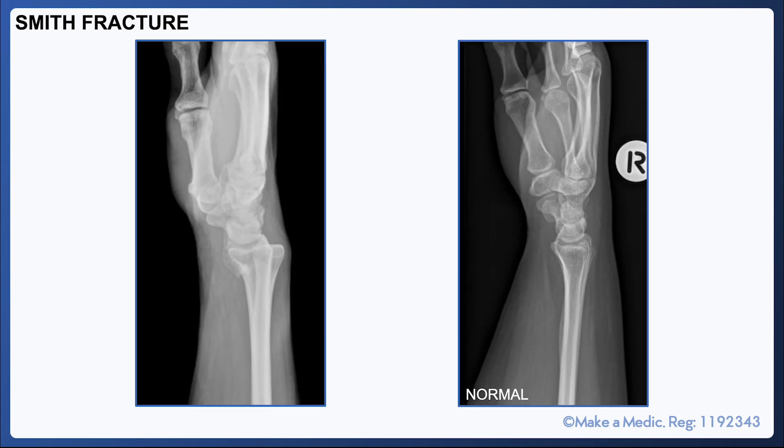On the lateral view, however, you can clearly see that the distal radius is displaced in a volar direction, rather than a dorsal direction.